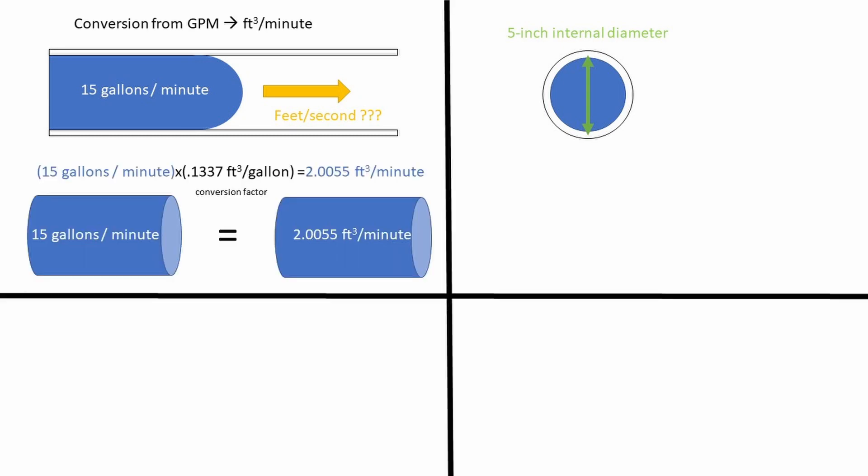So we need to convert the gallons per minute value to cubic feet per minute. This can be done by using the conversion factor 0.1337. This is just stating that for one gallon, it is equal to 0.1337 cubic feet. We get 2.0055 cubic feet per minute.